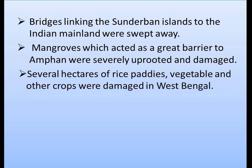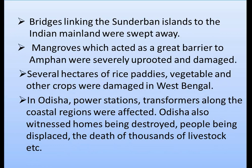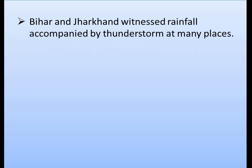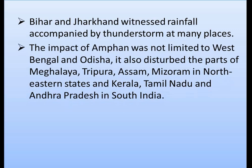Several hectares of rice paddies, vegetables, and other crops were damaged in West Bengal. In Odisha, power stations and transformers along coastal regions were affected, along with homes being destroyed, people being displaced, and the death of thousands of livestock. Bihar and Jharkhand also witnessed rainfall accompanied by thunderstorms. The impact of Amphan was not limited to West Bengal and Odisha — it also disrupted parts of Meghalaya, Tripura, Assam, and Mizoram in the northeastern states, as well as Kerala, Tamil Nadu, and Andhra Pradesh in south India.